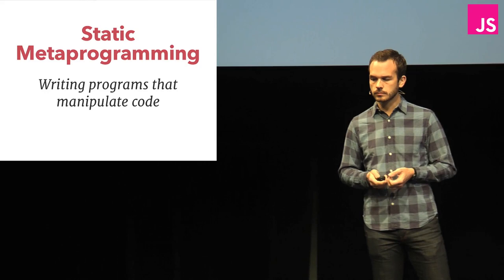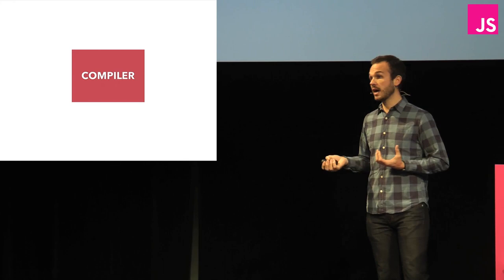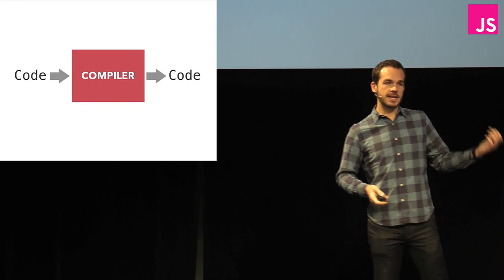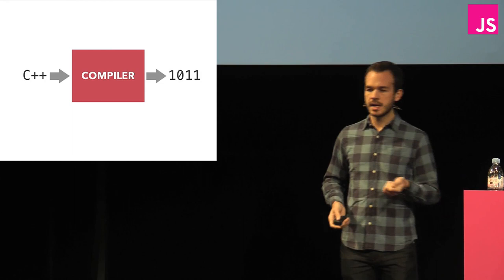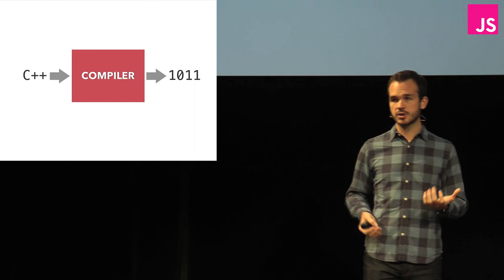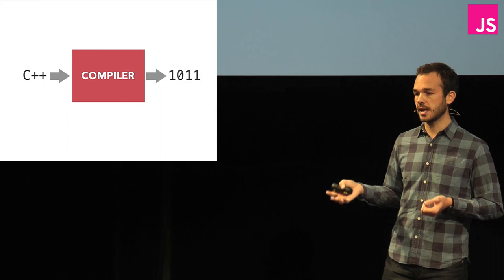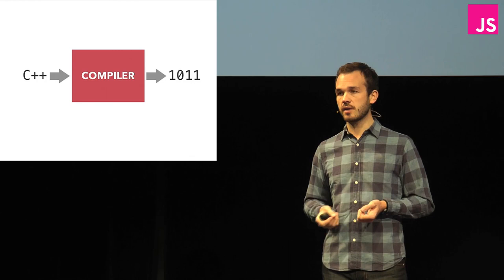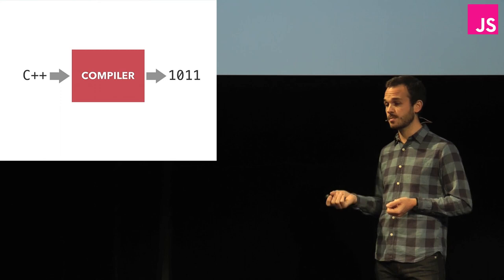A thing that manipulates code — a compiler is actually a really good example of that. A compiler is a thing that takes code in and outputs code. Normally a compiler takes in some high-level code and outputs something lower level. A C++ compiler spits out machine code, and a Java compiler spits out Java bytecode. But you can also compile to another high-level language. A lot of you are probably familiar with CoffeeScript, which just compiles to JavaScript. People sometimes call these transpilers, but it's basically just a compiler.